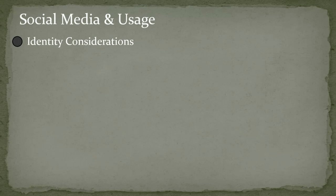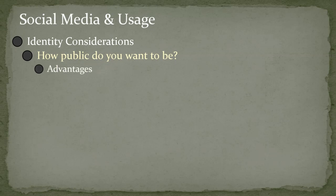Let's talk about some usage considerations — an extension of the previous points but in more detail. The first is identity considerations: how public do you want to be, how public can you be? For some folks there's no question at all; for others, navigating privacy is more complex. There are people who have had stalkers, or who have been subjected to domestic violence, which raises serious questions about how public to be, what name or images to use to present yourself.